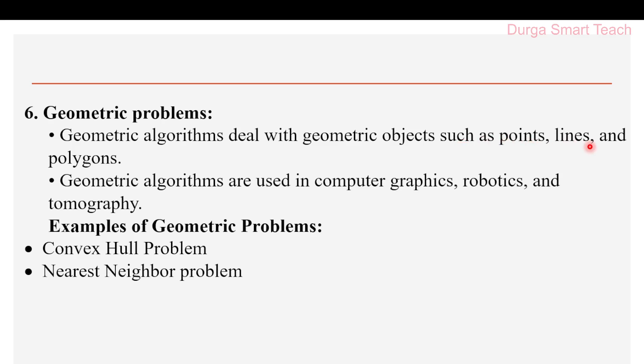The sixth problem type is geometric problems. Geometric algorithms deal with geometric objects such as points, lines, and polygons. These are used in computer graphics, robotics, and tomography. An example is the convex hull problem — given a set of points in a plane, find the closest point to a given query point. This type of problem is also known as the nearest neighbor problem.